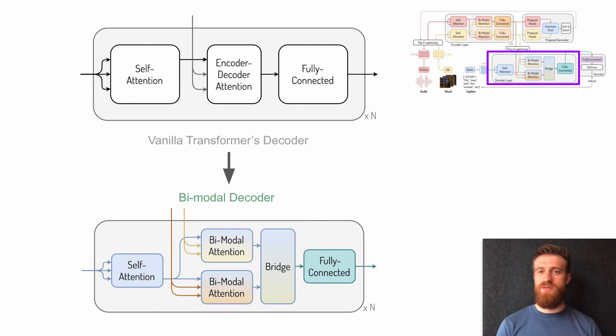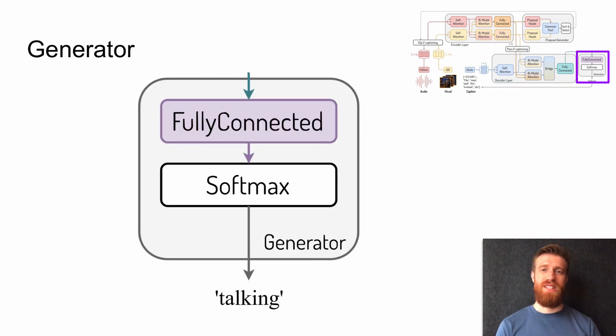Following the original transformer architecture for bimodal encoder and decoder, we use skip connection and layer normalization, as well as the concept of multi-headed attention. Finally, the output of decoder is used to generate a distribution for the next caption word.